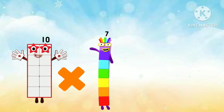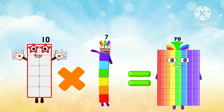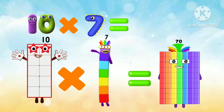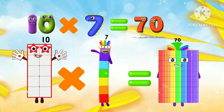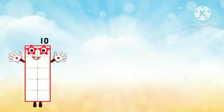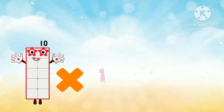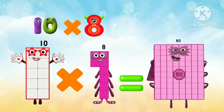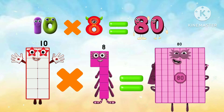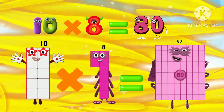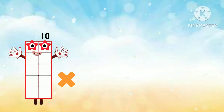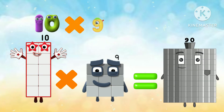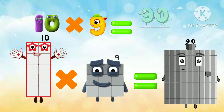10 7's are 70, 10 x 7 equals 70. 10 8's are 80, 10 x 8 equals 80. 10 9's are 90, 10 x 9 equals 90.